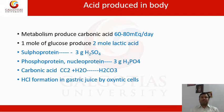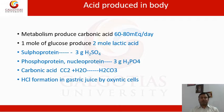Now we can understand how acid is produced inside the body. Through metabolism, carbonic acid is produced at 60 to 80 mL per day because carbon dioxide combines with water to form carbonic acid inside cells. One mole of glucose produces two moles of lactic acid. Sulfur-containing proteins produce approximately 3 grams of sulfuric acid. Phosphoproteins and nucleoproteins produce orthophosphoric acid. Hydrochloric acid is produced by oxyntic cells in the stomach.